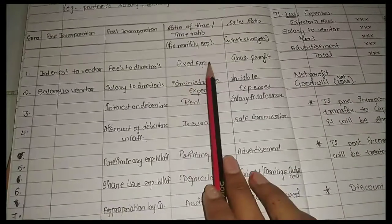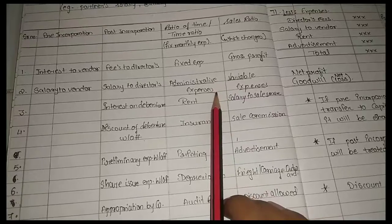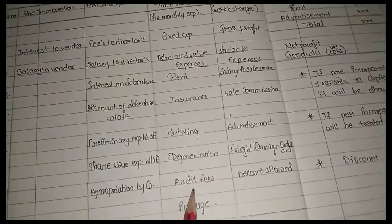Time ratio, which is for fixed expenses like rent, insurance, printing, depreciation.